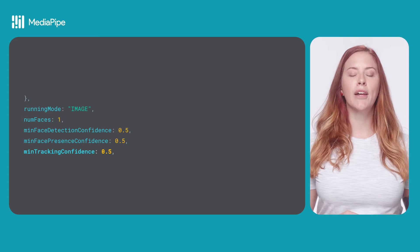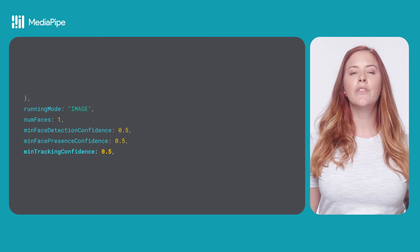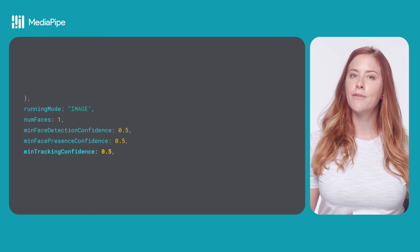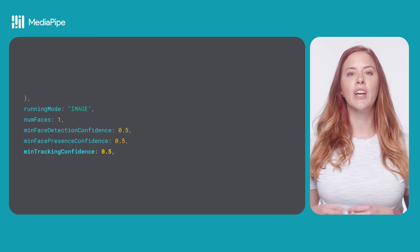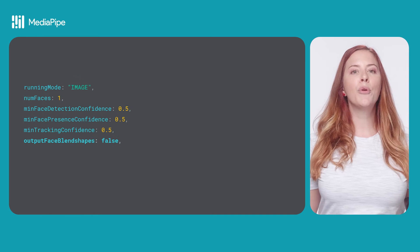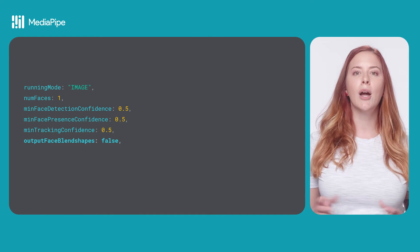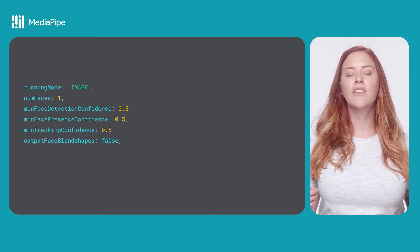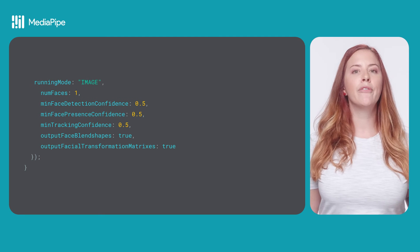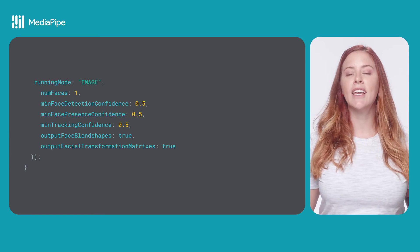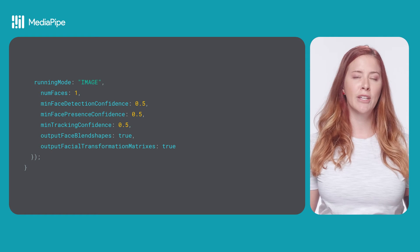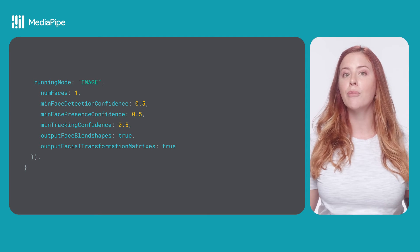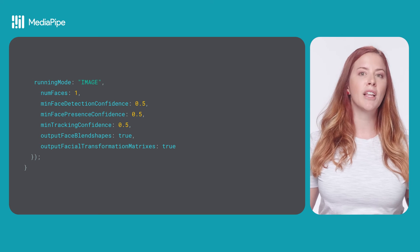minTrackingConfidence is the minimum confidence score for face tracking to be considered successful; this score is also a float between 0 and 1. The lower the minTrackingConfidence, the higher the chance that we can skip the more time-consuming face detection. outputBlendShapes is a Boolean indicating whether face landmarker outputs face blend shapes — used for rendering the 3D face model — with a default value of false. outputFacialTransformationMatrices is a Boolean indicating whether face landmarker outputs the facial transformation matrix, which is used to transform face landmarks from a canonical face model to the detected face; it also has a default value of false.